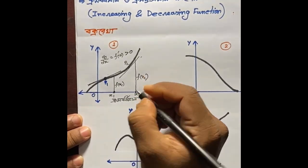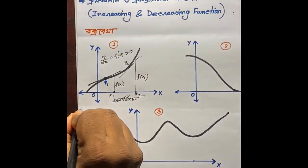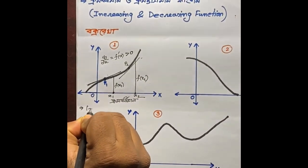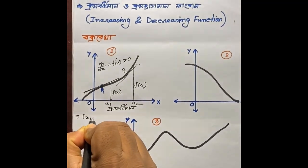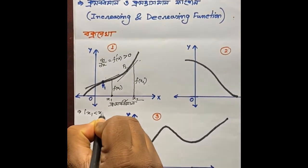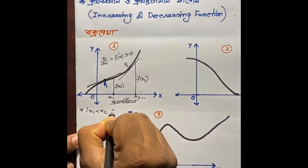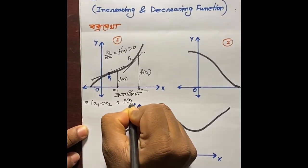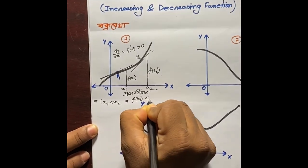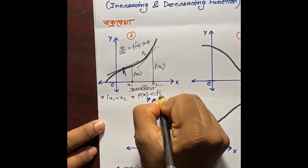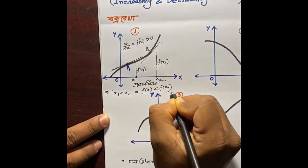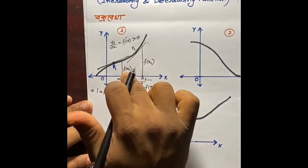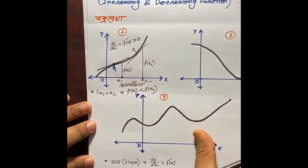যেমন আমি বলতে পারি, যখন x1 < x2 হলে f(x2) > f(x1), তাহলে f(x2) এই বাড়ে — একটা এটা প্রমো বর্ধমান ফাংশন।